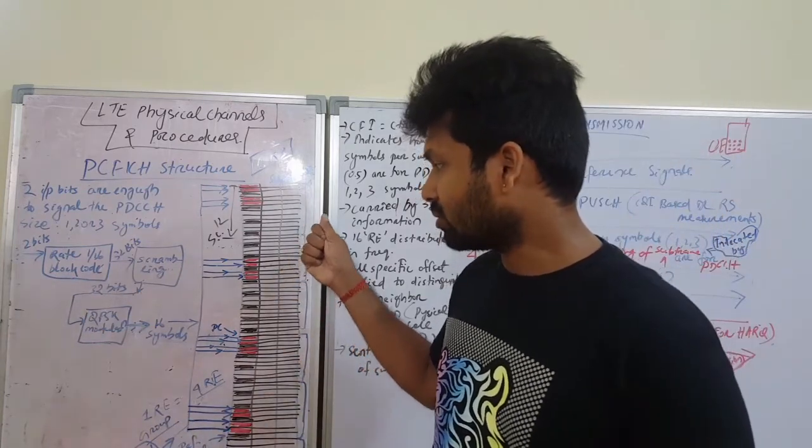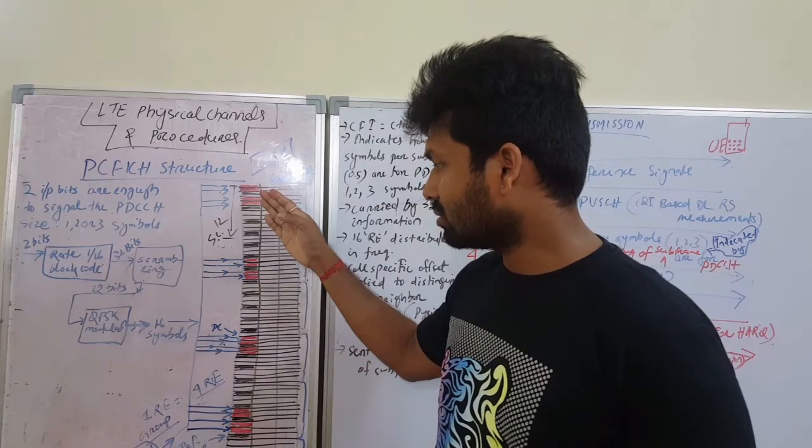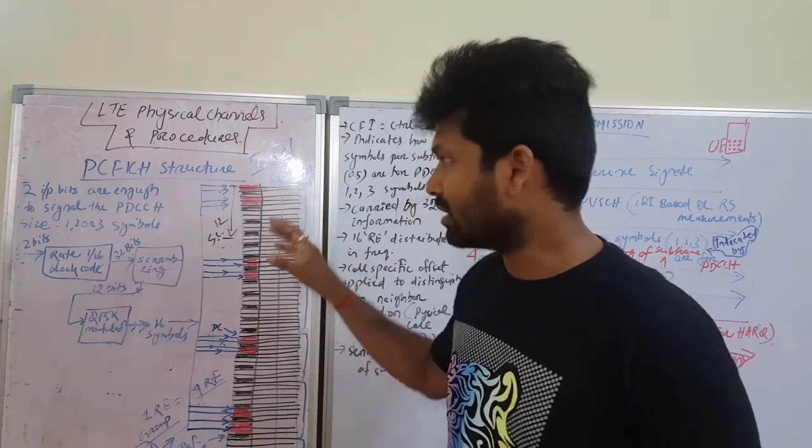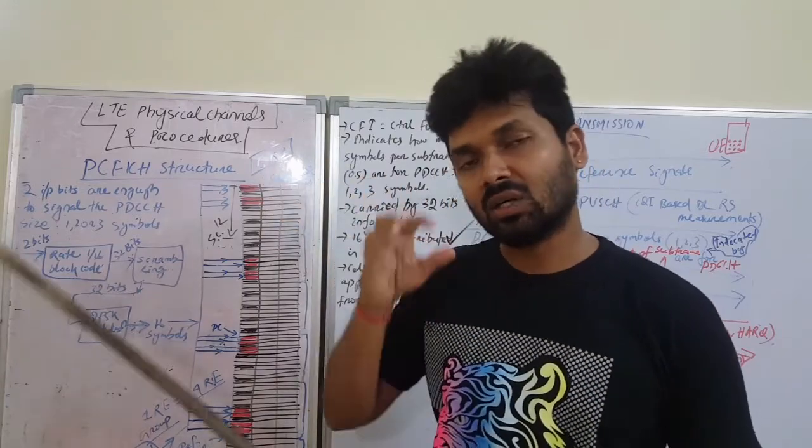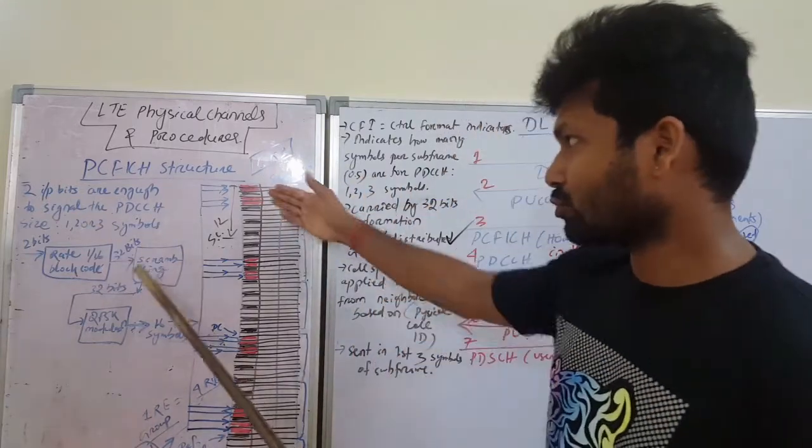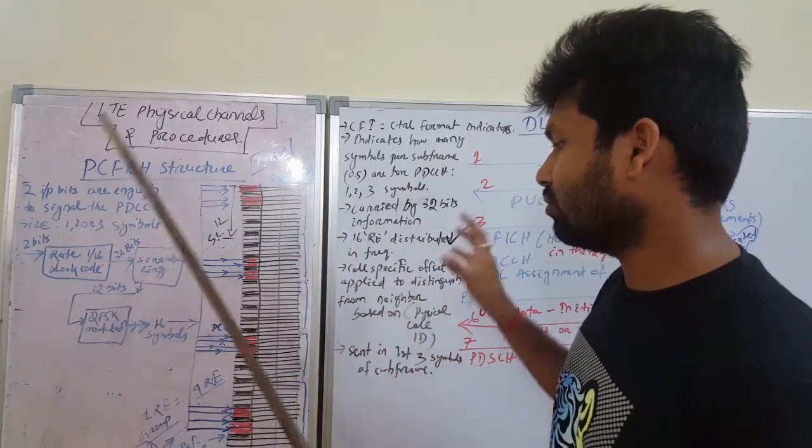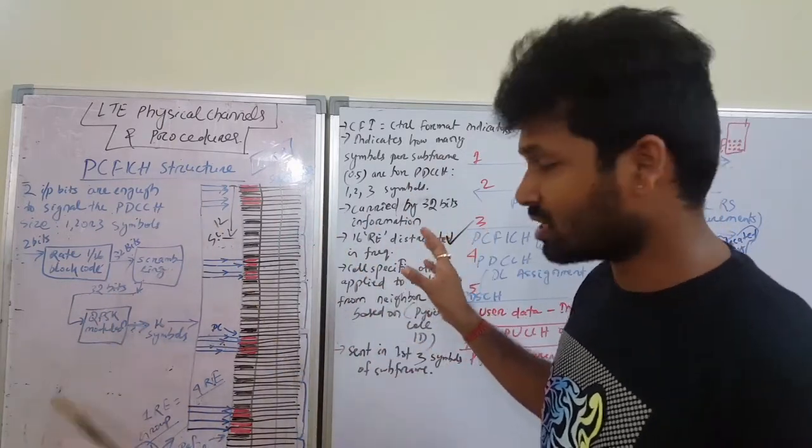Four resource elements are combinedly called one resource element group. So four resource element groups or 16 resource elements are used for FICH transmission.